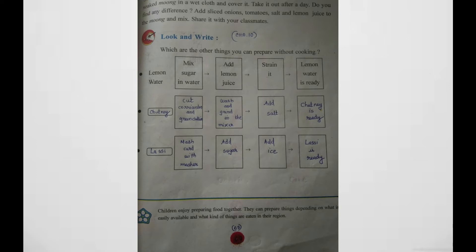Next one, we are going to make chutney. Which ingredients do we need to make chutney? Let's make one chutney here. Cut coriander and green chilies, wash and grind in the mixture, add salt. Chutney is ready.